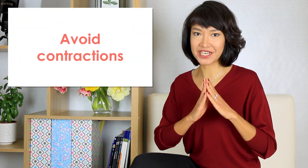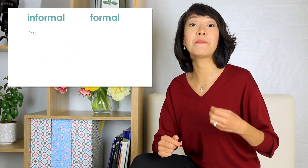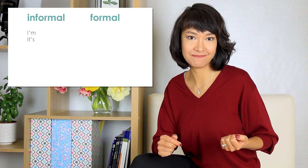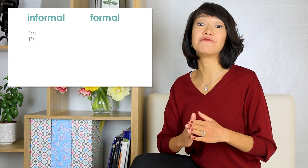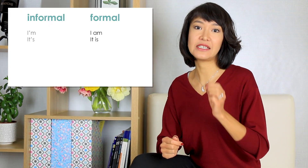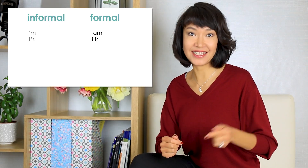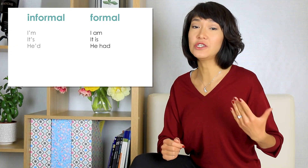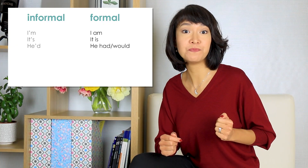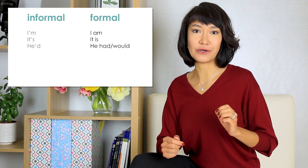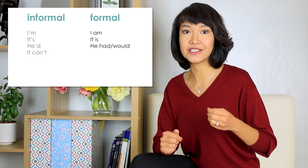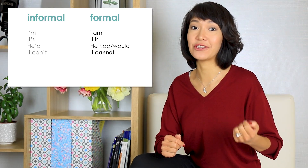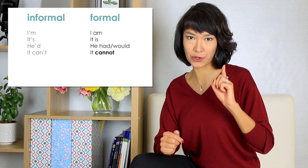Here is a simple tip to begin. Avoid contractions such as I'm or it's. Instead, write I am, it is. The 'd in he'd can mean had or would. Please note that the full form of CAN'T is CANNOT — in one word.